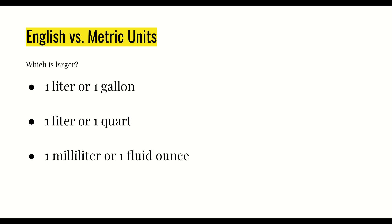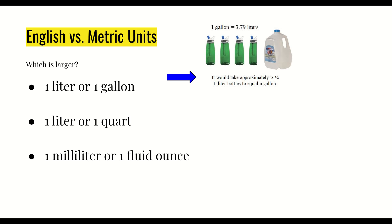Just like when we talked about length, we're going to compare metric units to our U.S. customary units to get a reference for the size of these things. We're going to look at a liter and a gallon, a liter and a quart, and a milliliter and a fluid ounce. One gallon is 3.79 liters, so it would take approximately three and three-quarters one-liter bottles to equal a gallon — meaning a gallon is almost four times as big as a liter, making the gallon the bigger option.